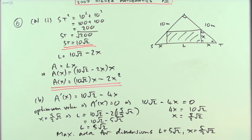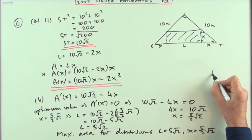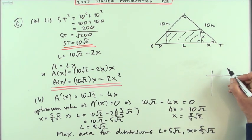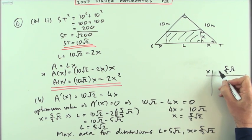Now one other thing I would do, just for safety, would be—even though the question said maximum area—I would still demonstrate that that produces a maximum by putting down a table, a nature table. It was at 5 over 2 root 2 for x.